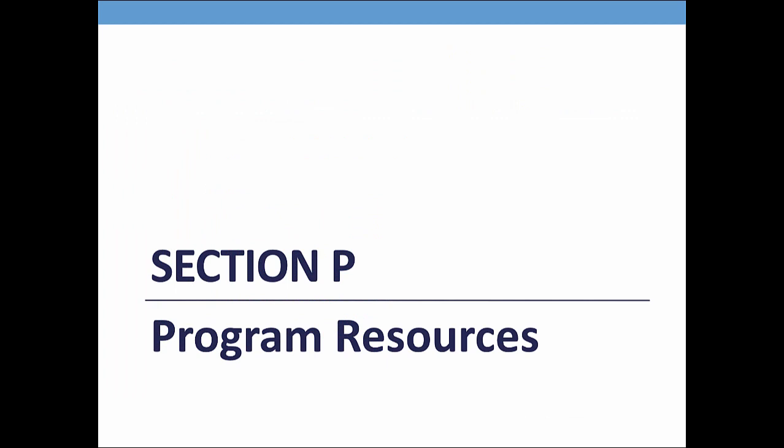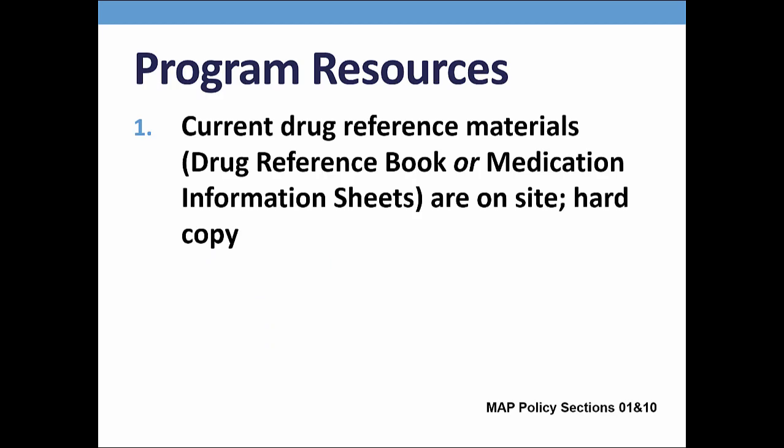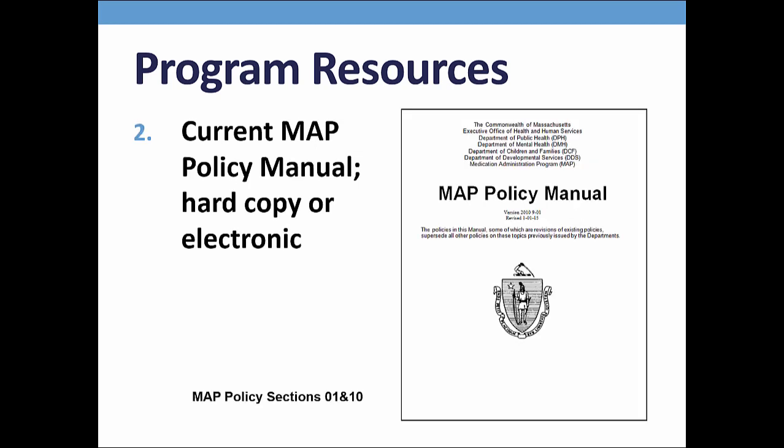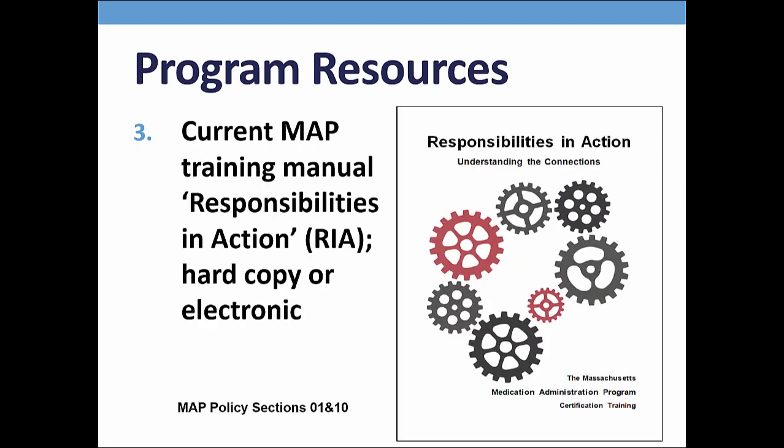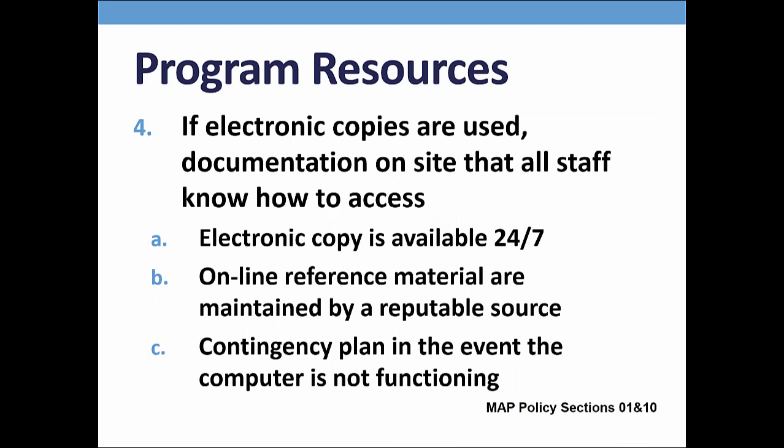Section P: Program Resources. A hard copy of either a drug reference book or printed medication information sheets must be on site and current within two years. A copy of the DPH MAP Policy is required to be on site either as a hard copy or an electronic version. As of today, the most current DPH MAP Policy is dated 1-1-15. I'll ask to see the Responsibilities in Action training curriculum and check to see that it's current. If required documents or reference materials are stored on site electronically, there are additional requirements: all staff must be trained on how to access the information and training must be on site, the information must be available to staff 24/7, if the reference material is a website it must be a reputable one, and there must be a contingency plan in the event the computer is not functioning.